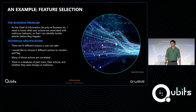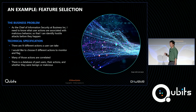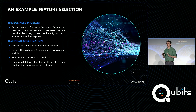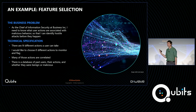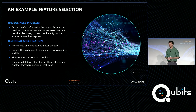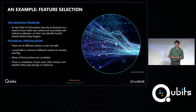I always find it useful to start with a worked example. The example I want to use today is feature selection — one of our most common areas of application. To the point that we actually have an AWS Marketplace listing around feature selection that you can get more or less off the shelf. The business problem specification goes like this: as the chief of information security at a company, I need to know what actions are associated with malicious behavior so that I can identify hostile attacks on my system before they happen.